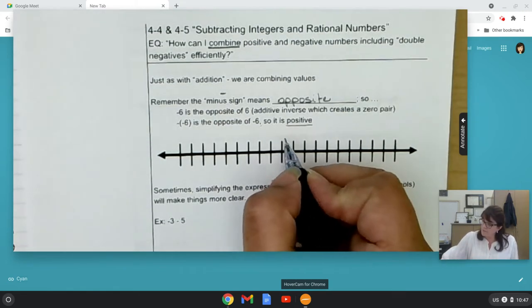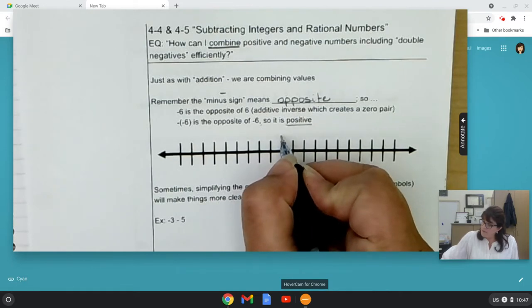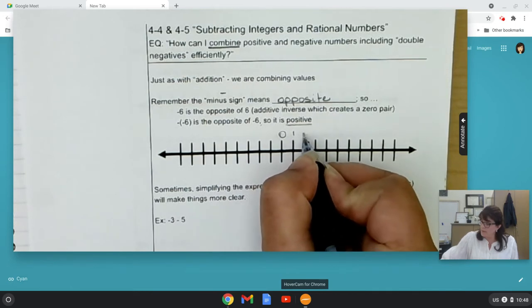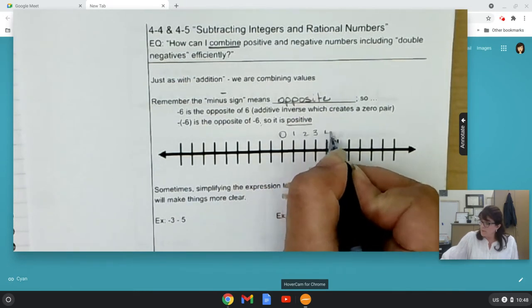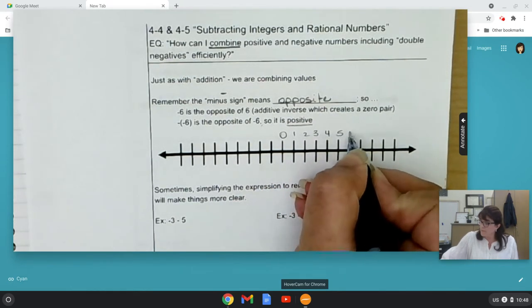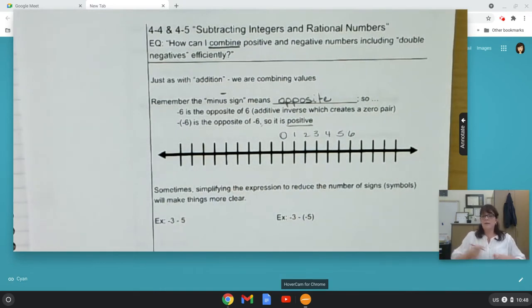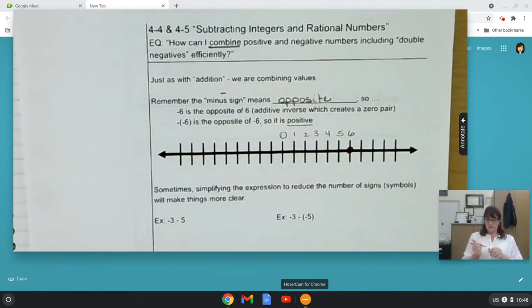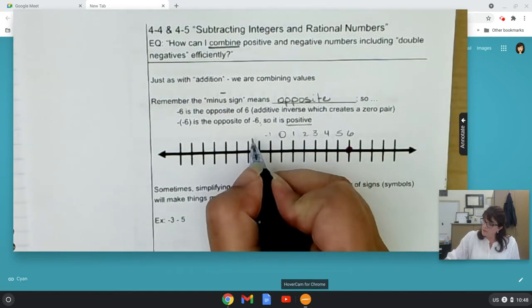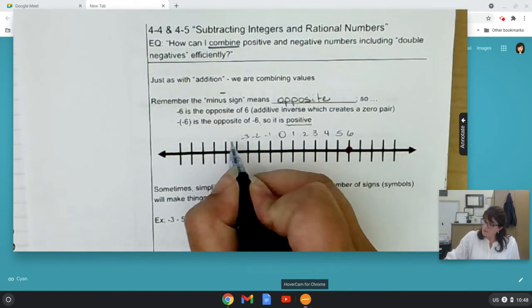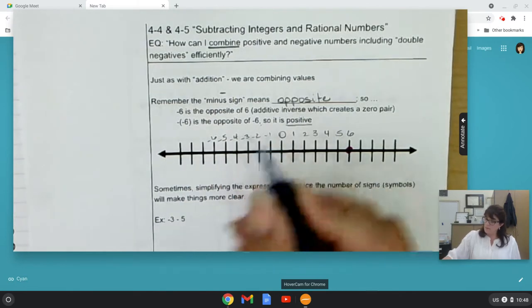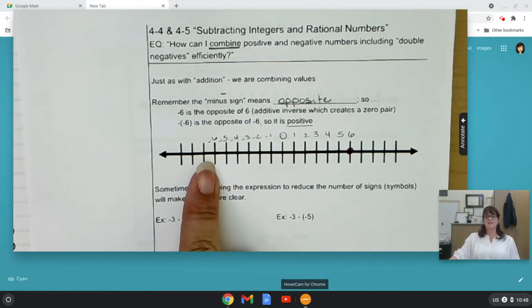So, let's think about that. If I have zero on a number line and I put six here, and I said, well, what's the opposite of six? You guys would say, and you should write this in as well, well, it's negative six, Mrs. Atkinson.